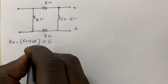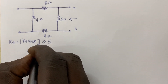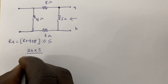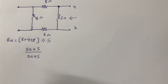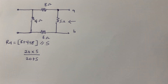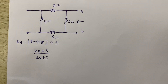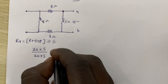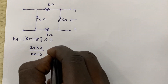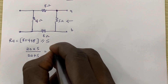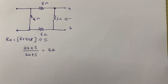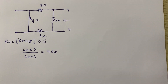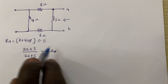So we compute 20 times 5 over 20 plus 5, which gives us 100 divided by 25, which equals 4 ohms. Just like that, we are done with our Norton resistance.